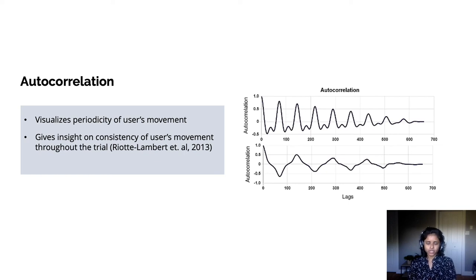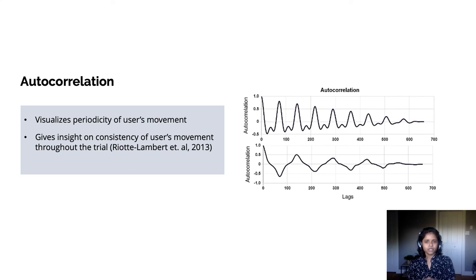For the autocorrelation metric, the movement of the user is correlated with itself as a measure of periodicity and as a measure of the consistency of the user's movement throughout the exercise. In the first graph, the peaks are higher and the autocorrelation decays more slowly than in the second. We can infer from these that there is a higher level of periodicity in the first case than in the second.